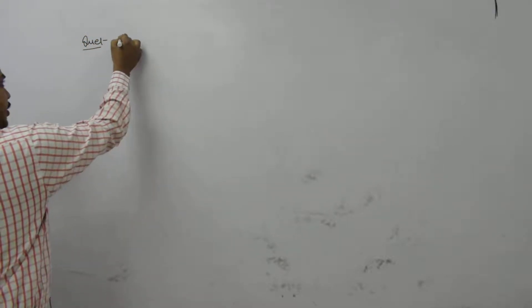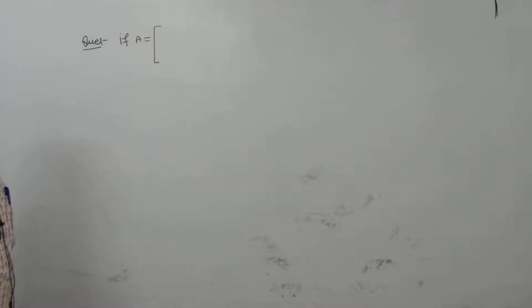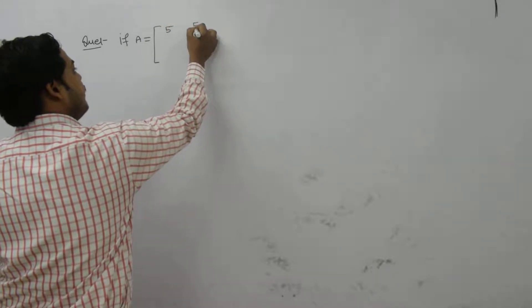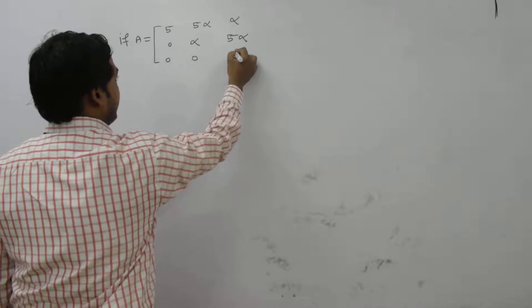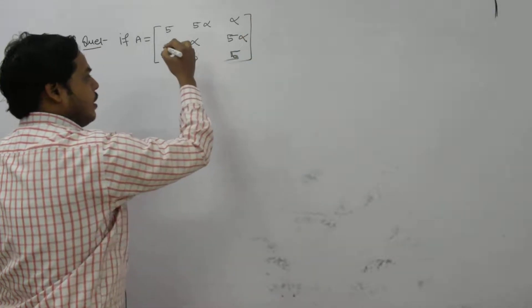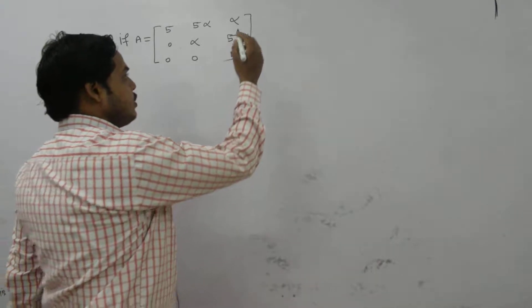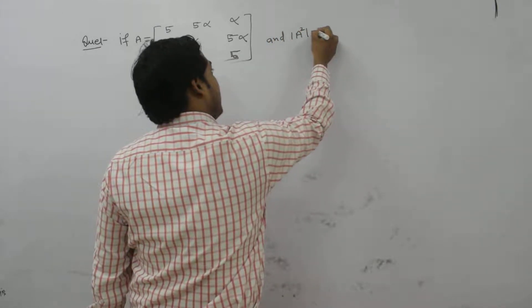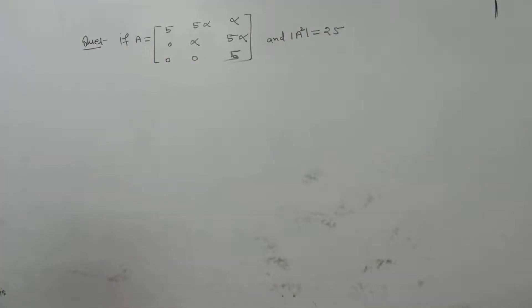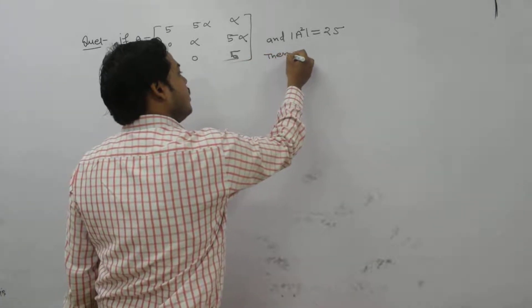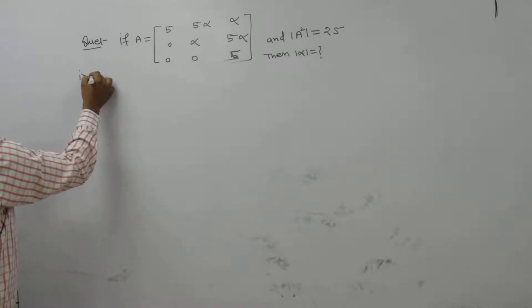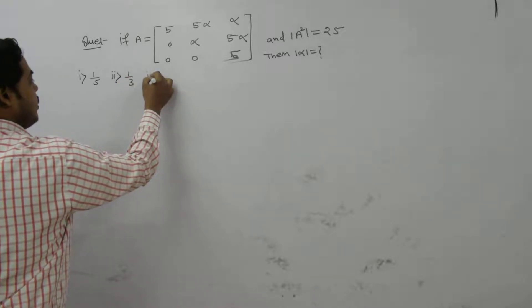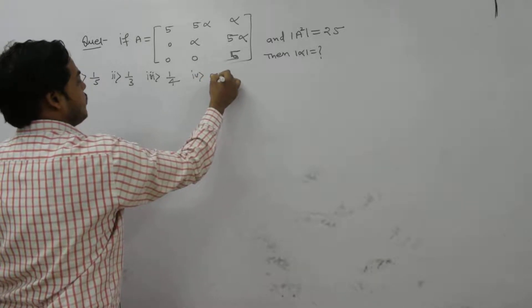Write down the first question. If a matrix A is given — suppose we write down an upper triangular matrix with entries: first row is 5, alpha, alpha; second row is 0, alpha, 5 alpha; third row is 0, 0, 5; and again 0, 0, 5. If the determinant of A squared is 25, then find the value of mod of alpha. Options: 1/5, 1/3, 1/4, or none.